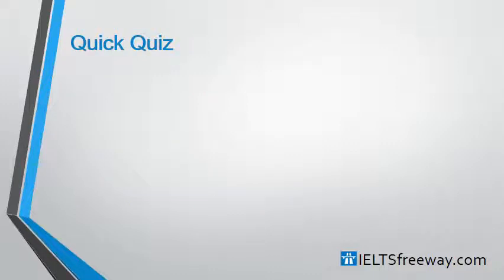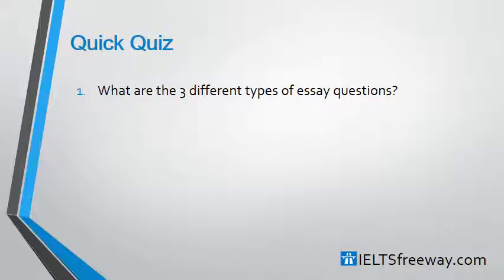Now let's see if you've been listening — it's time for our quick quiz. Pause the video after each question and say the answers out loud to yourself; it helps you to remember the facts. Then press play for the answer. Question number one: what are the three different types of essay questions? Hopefully you said: an essay that requires you to discuss both sides of an argument; an essay that requires you to give an opinion and justify it; and an essay that requires you to provide a solution to a problem.